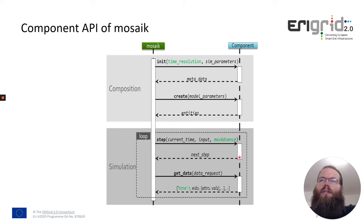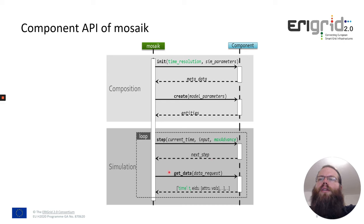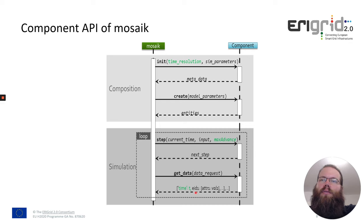The component does its calculation in the model instances and when finished, it returns the next step — saying, for example, 'I want to be stepped in 30 seconds of simulation time.' For event-based or hybrid types, this can also be none, meaning the component doesn't need to be stepped until a new event occurs. Then after the step, Mosaic can call the data request. The data request is a dictionary defining which data Mosaic wants from a component. The component, which usually has a cache for the results of the step, provides the data back to Mosaic along with a time for which this data is valid and the values for the attributes.